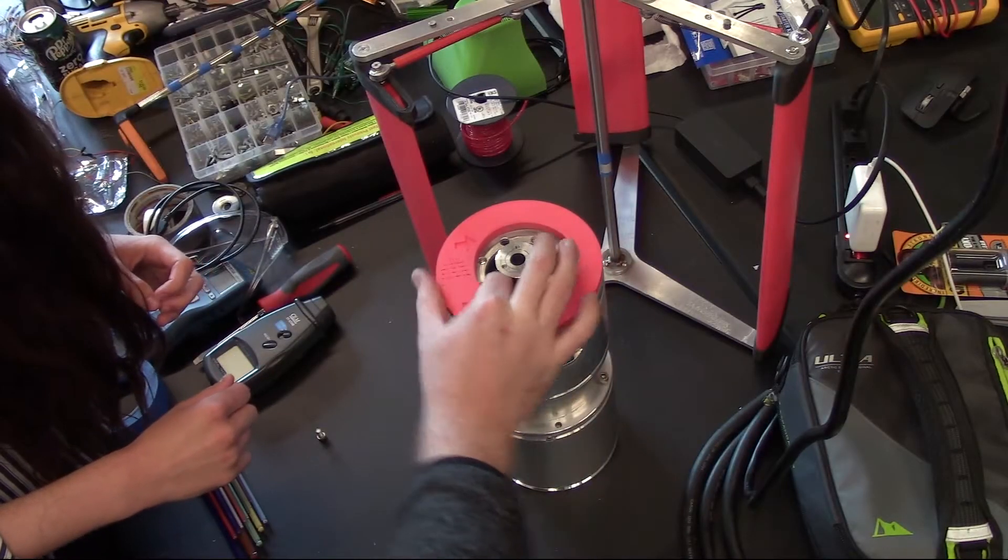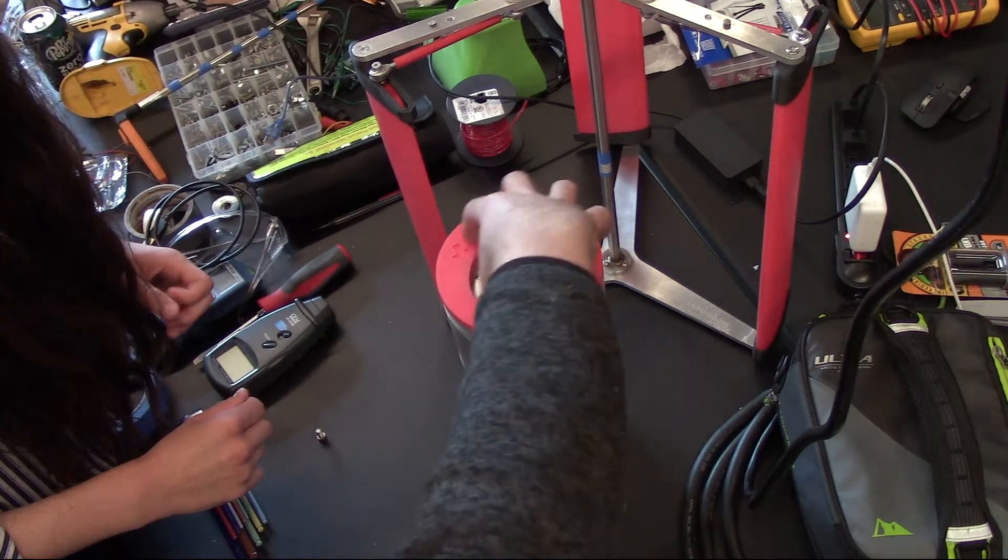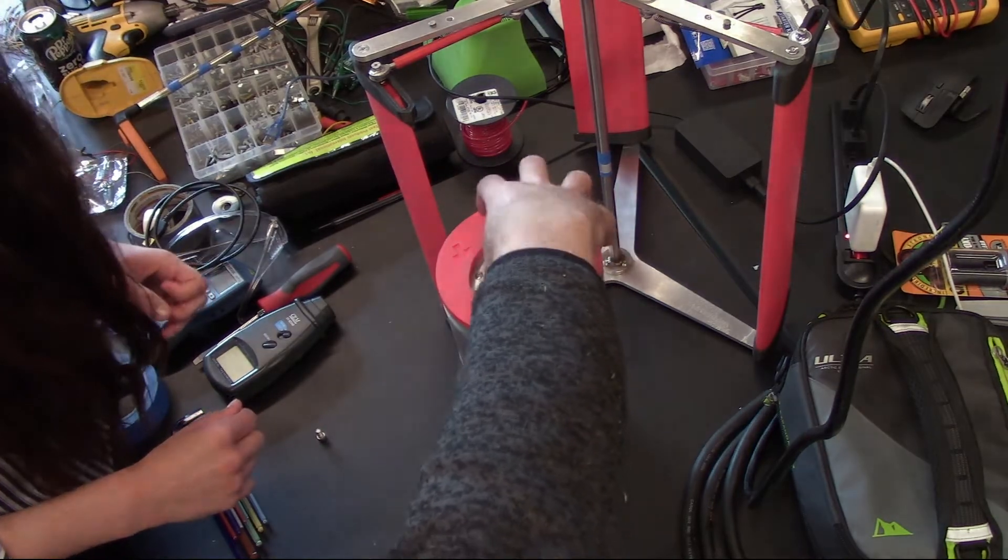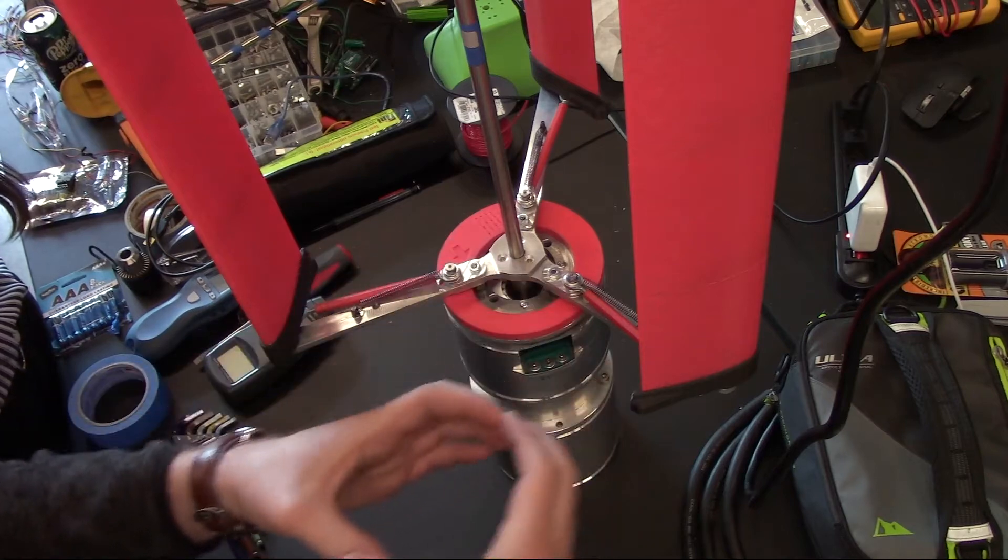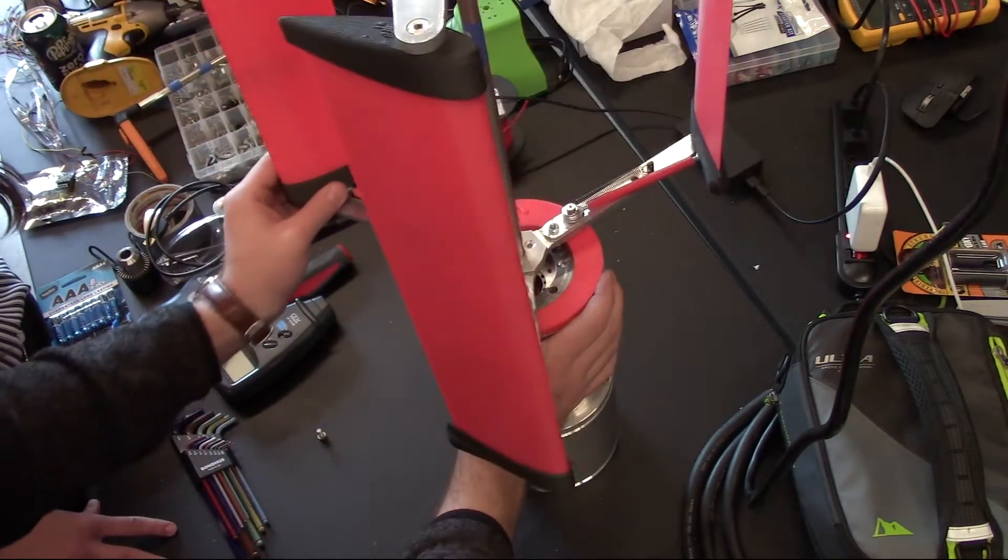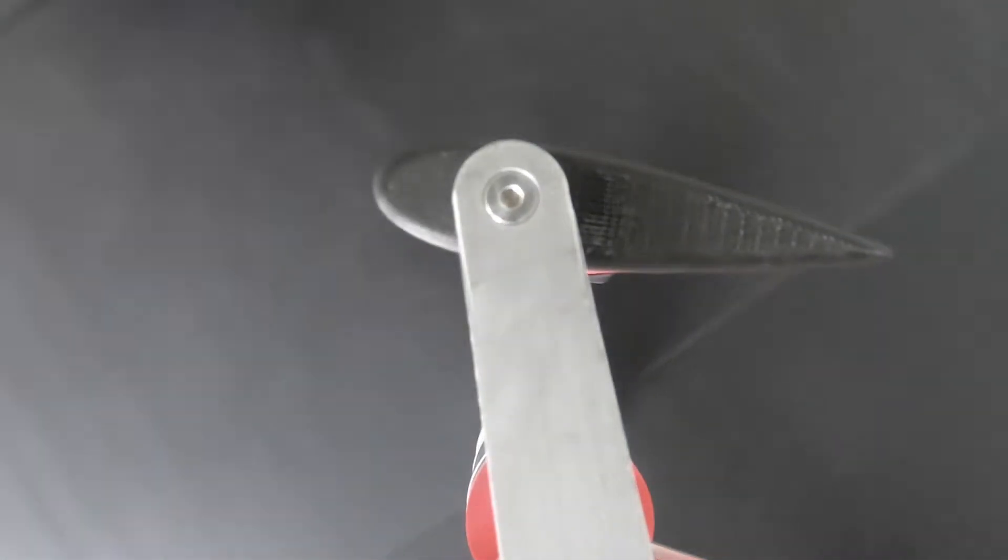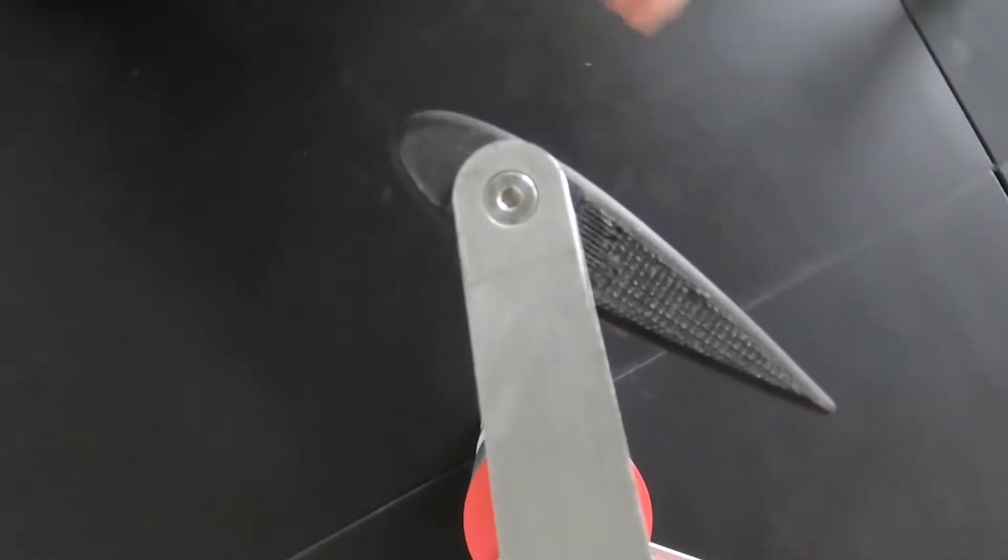There's these rollers here and they roll on this cam surface. The eccentric cam is not circular to the rotation of the shaft. And so what that does is throughout the rotation, it's changing the pitch of the airfoils.